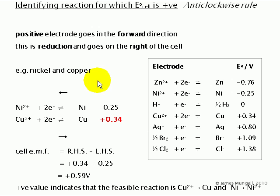For example, with nickel and copper, copper here has got a more positive electrode potential than nickel does. I've written them out here. So we would say that the copper would go in the forward direction and therefore the nickel goes in the reverse direction. This is redox. So one will be reduction, the other will be oxidation.